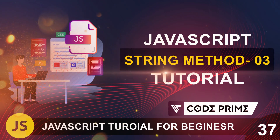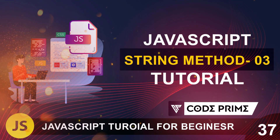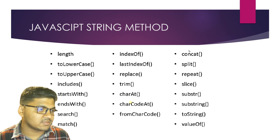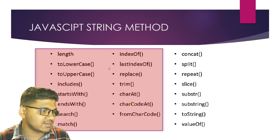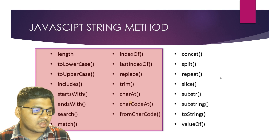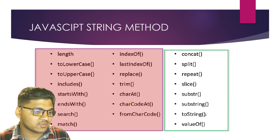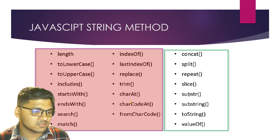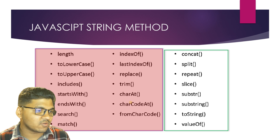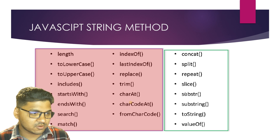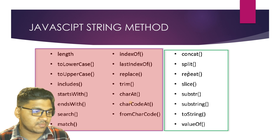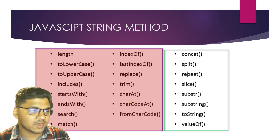Hello everyone, this is the JavaScript string method part 3, tutorial series number 37. In the previous video we learned about the string methods from length to charCodeAt, which we completed. Today we are going to learn from concat to valueOf — the functions: concat, repeat, splice, slice, substr, substring, toString, and valueOf. We are going to explain and do them practically.